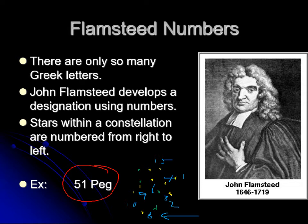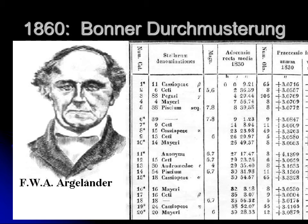This system worked really well for a long time because it covered every naked-eye star. Some stars already had Bayer designations, so they ended up with both a Bayer designation and a Flamsteed number. By the middle of the 19th century, Friedrich Argelander decided that wasn't good enough and published a new star catalog.